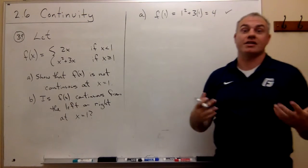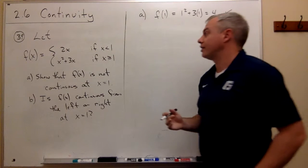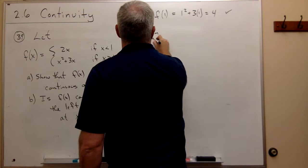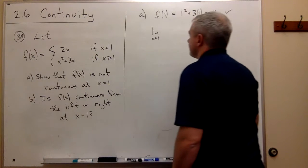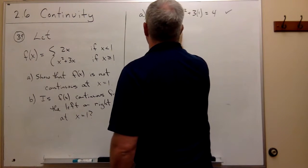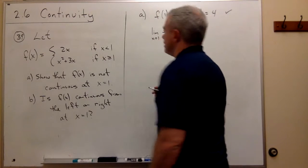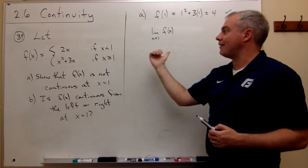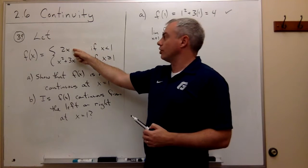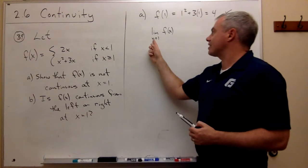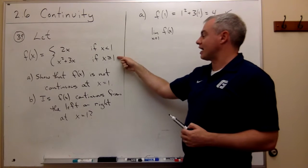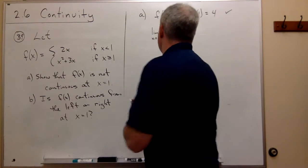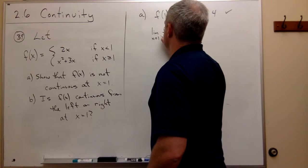Second question, does it have a limit value at 1? So we want to ask the question, what's the limit as x goes to 1 of this function f(x)? Well, this is a little bit harder question, because if x is coming at 1 from the left side, then we're looking at 2x. And if x is coming at 1 from the right side, then we're looking at x squared plus 3x. So maybe what I should do to start is, let's just say, what if we're coming at the function f(x) from the left side?